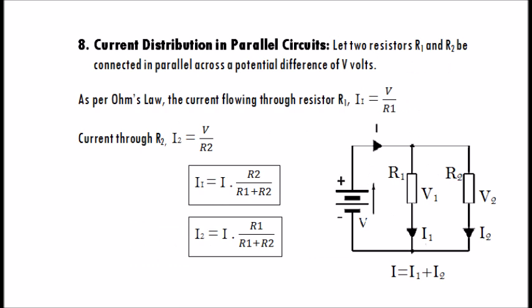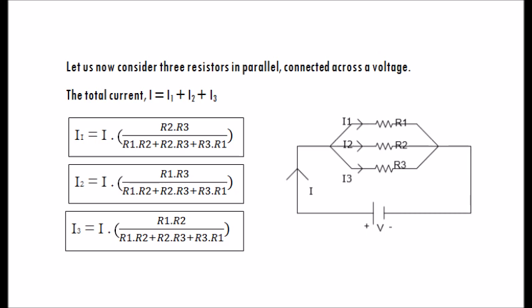Current distribution in parallel circuits: let two resistors R1 and R2 be connected in parallel across a potential difference of V volts. As per Ohm's law, the current through R1 is I1 equals V over R1, and the current through R2 is I2 equals V over R2. Therefore, I1 equals I multiplied by R2 over (R1 plus R2), and I2 equals I multiplied by R1 over (R1 plus R2). For three resistors in parallel, the total current is I equals I1 plus I2 plus I3.